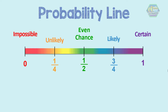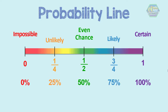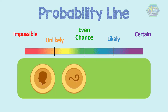We can also use percentages to represent the probability line: 0 is simply 0%, one half is 50%, and 1 is 100%.